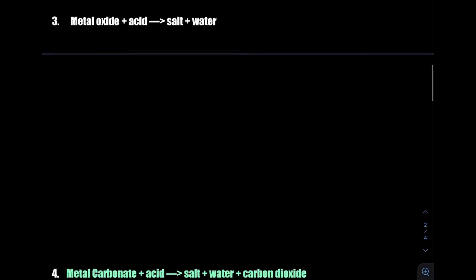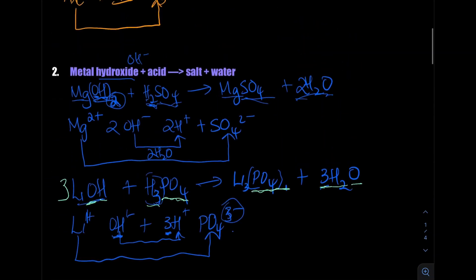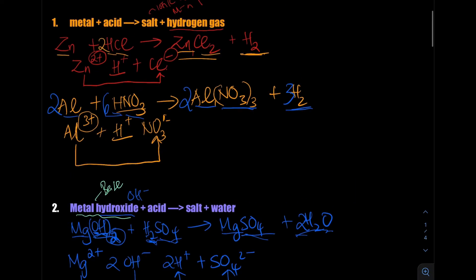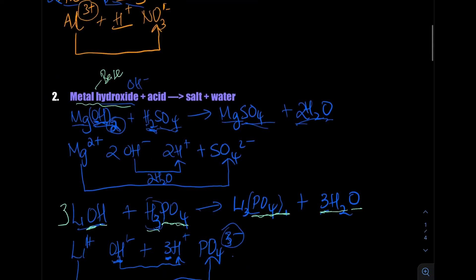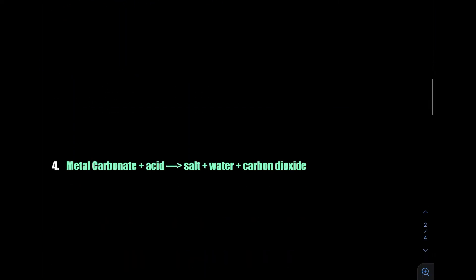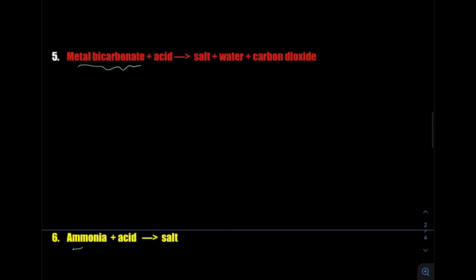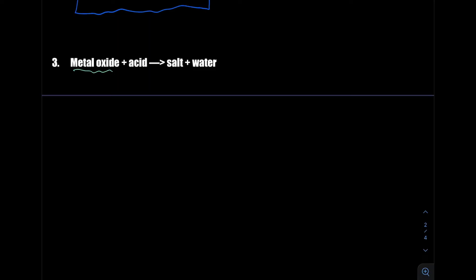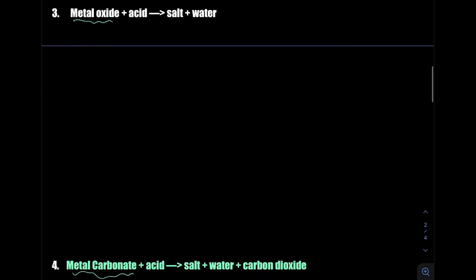The next type is metal oxide plus acid — metal oxide is a metal bonded with oxygen, and it's a base. Let's take aluminium oxide reacting with carbonic acid. We know the products will be salt and water. There will be an exchange of ions. Aluminium is in group 3 — there are two aluminiums, and there are three oxygens with a 2− charge. Carbonic acid provides two protons and the carbonate ion CO₃²⁻.